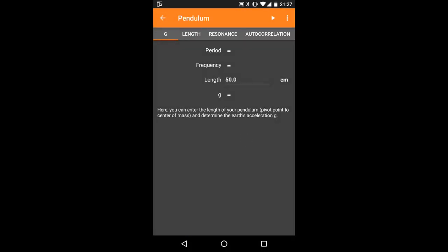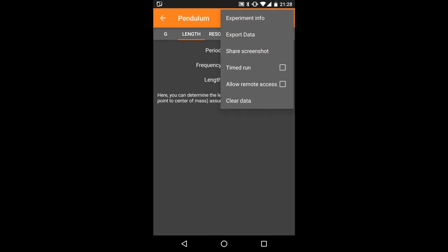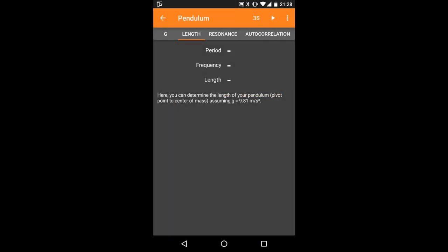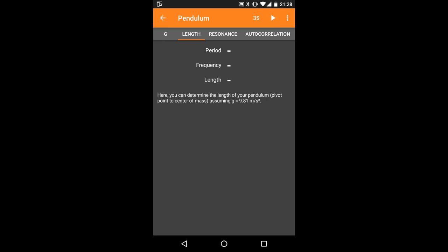Switch to the length tab and select the timed experiment function from the menu. Set a start delay of 3 seconds and a duration of 10 seconds. This means that after pressing start, FIFOX will wait 3 seconds before actually measuring and it will automatically stop 10 seconds later.